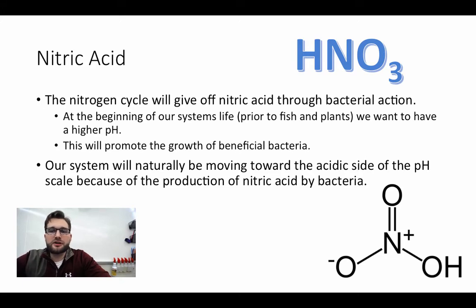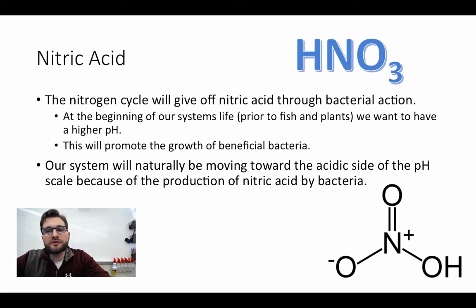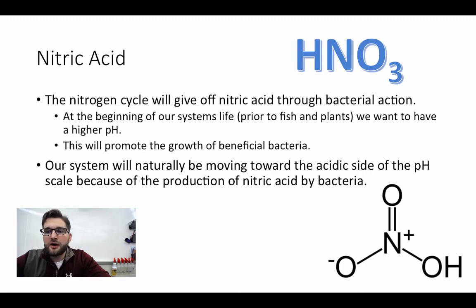Through a bit of research and looking into what we're expecting our system to do — as we add fish and as bacteria start to culture — through the nitrogen cycle, we're expecting bacteria to give off nitric acid, HNO₃. Right now we are sitting at a pH somewhere between 8.2 and 8.5, so we're a little high. Our hope is that as nitric acid is produced, it will eventually bring that pH down.